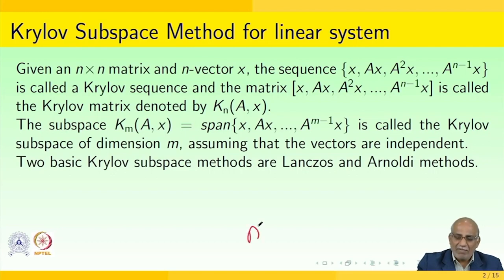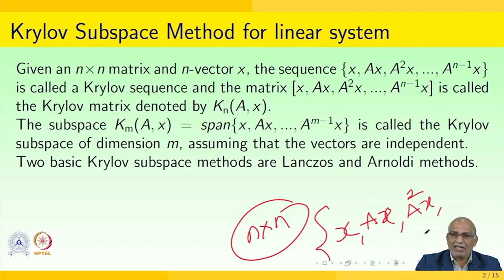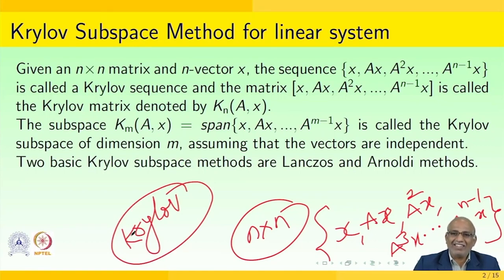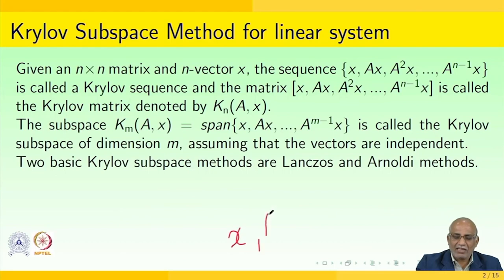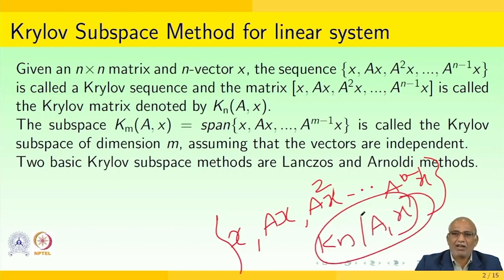Suppose you are given an n×n matrix and an n-vector x. The sequence x, Ax, A²x, A³x, ..., A^(n-1)x is called a Krylov sequence. The associated matrix — the Krylov matrix — is written as K(n, A, x), with columns x, Ax, A²x, ..., A^(n-1)x.